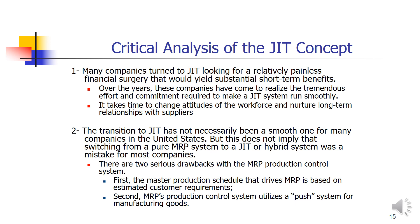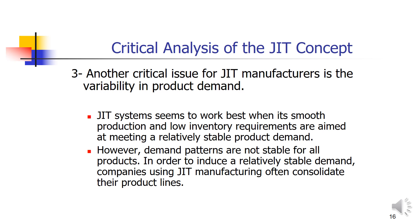Another critical issue for Just In Time manufacturing is variability in product demand. Just In Time is designed for stable demand, but stability is not always true across all systems — we have variability where demand can go up or down, and there can be seasonality. Just In Time works best when smooth production and low inventory requirements are aimed at meeting relatively stable product demand. However, demand patterns are not always stable. To induce a relatively stable demand, companies using Just In Time manufacturing often consolidate their product lines, averaging the highs and lows to smooth production according to demand variability.